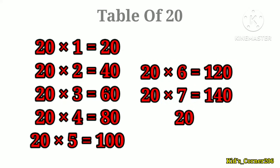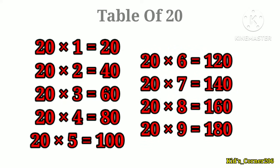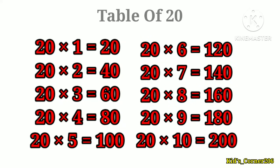20 sixes are 120, 20 sevens are 140, 20 eights are 160, 20 nines are 180, 20 tens are 200.